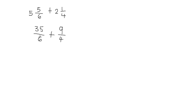Now since we have different denominators, we cannot add these fractions unless we have the same denominators. So what I'm going to do is find the least common multiple of my denominators, 6 and 4. Let's list down the multiples of 6 and 4.